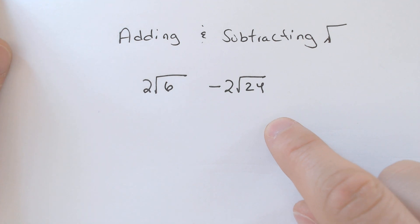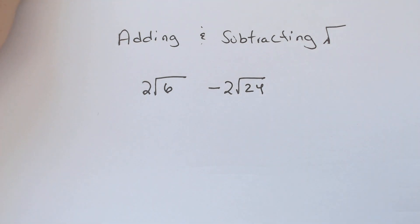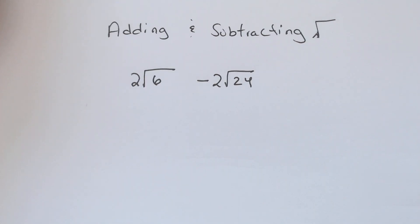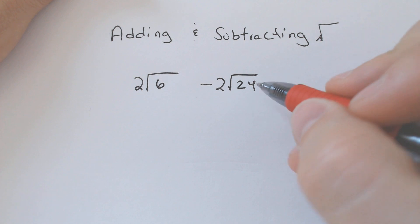Adding and subtracting square roots is pretty easy. It's just a simplifying problem with an addition or subtraction at the very end. So as long as you know how to simplify a square root, then you'll be good to go. And I do have a video on that as well.